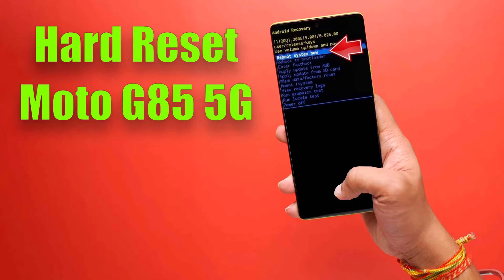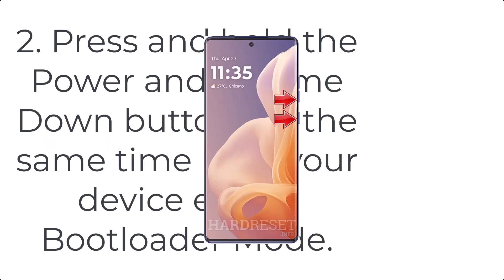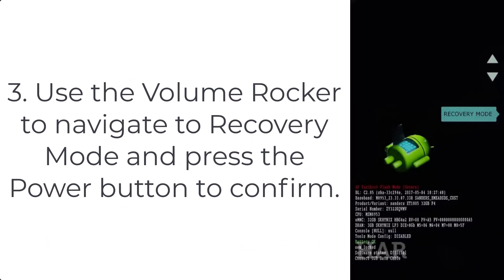How to hard reset Moto G85 5G. Step 1: First, turn off your device. Step 2: Press and hold the power and volume down buttons at the same time until your device enters bootloader mode. Step 3: Use the volume rocker to navigate to recovery mode and press the power button to confirm.